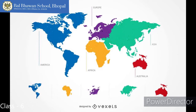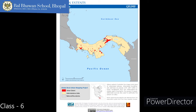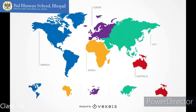North America and South America are connected to each other by the Isthmus of Panama. An isthmus is a narrow strip of land which joins two land masses. Australia is the smallest continent. Since Australia is surrounded by water on all its sides, it is called the island continent. Antarctica is a huge continent present in the southern polar region, and the South Pole lies at the center of this continent.